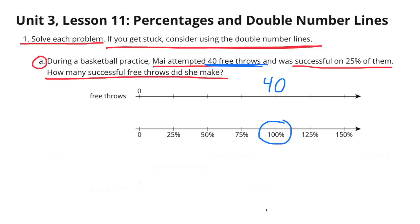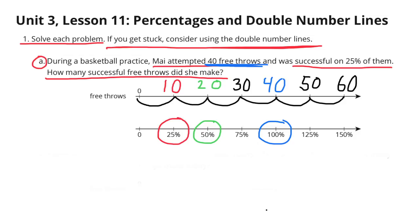Let's start by cutting the 40 in half to make 20, because if we cut 100% in half, we get 50%. Now we know 50% would be 20. Let's cut 50% in half. That would give us 25%. And then if we cut the 20 in half, we get 10. Now we know that they're counting by 10s.